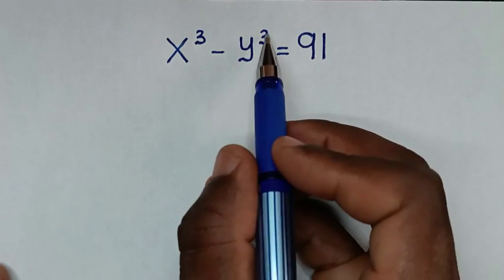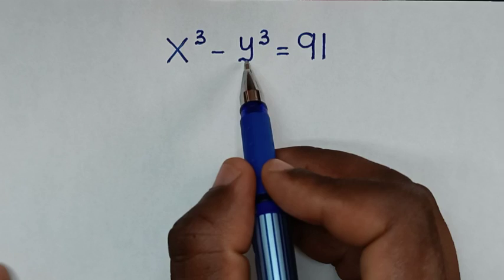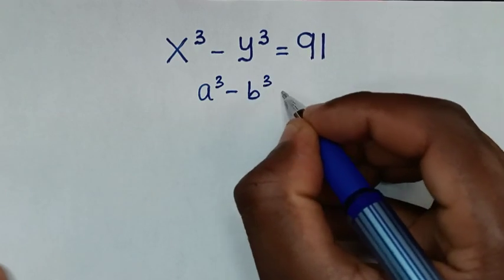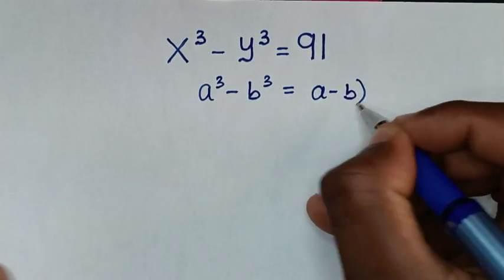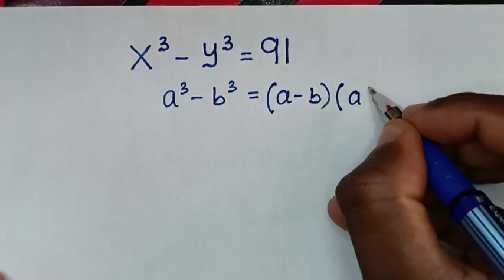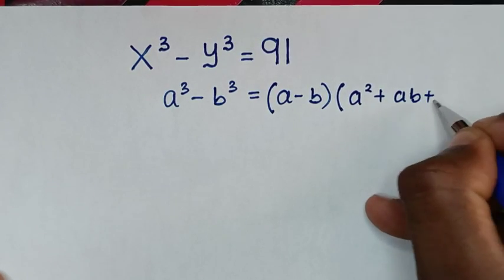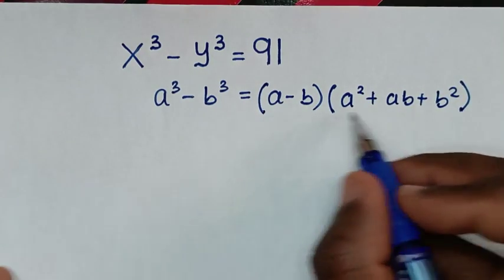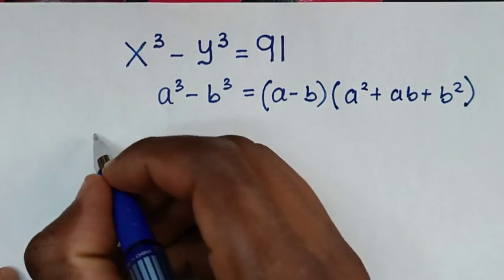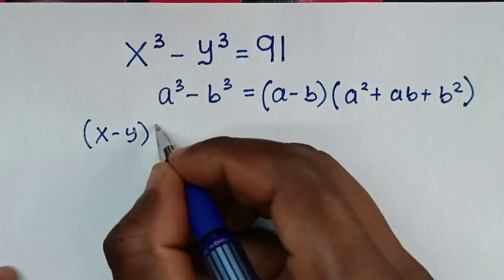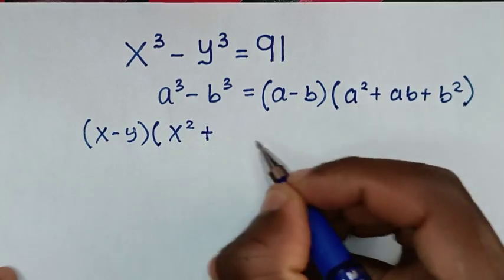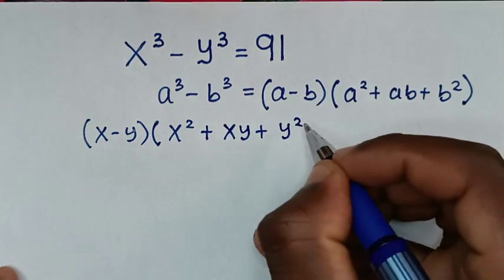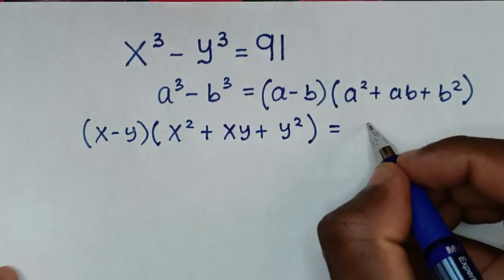Now in the first step, from the left side, x power 3 minus y power 3 is in the form of the algebraic rule: a power 3 minus b power 3, which is equal to (a minus b) bracket times (a square plus ab plus b square) bracket. We apply this form in terms of x, so it will be (x minus y) times (x square plus xy plus y square) is equal to 91.